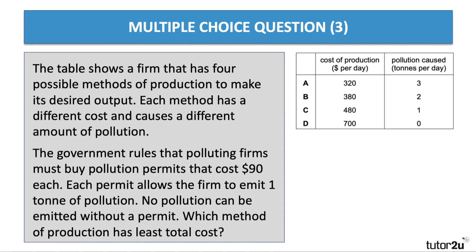Now question three is quite hard — it's one of the new questions, so it's definitely worth pressing the pause button and taking a moment to think through your answer. The table shows a firm that has four possible methods of production to make its desired output. Each method has a different cost and causes a different amount of pollution. As part of a carbon trading scheme, the government insists that polluting firms must buy pollution permits costing $90 per tonne of pollution. No pollution can be emitted without a permit. Which method of production has the least total cost?